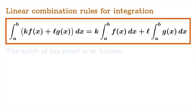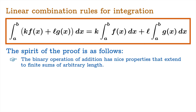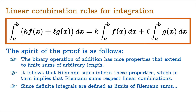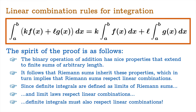The spirit of the proof is going to be as follows. The binary operation of addition has nice properties that extend to finite sums of arbitrary length. It follows that Riemann sums inherit these properties, which in turn implies that Riemann sums respect linear combinations. And since definite integrals are defined as limits of Riemann sums, and limit laws respect linear combinations, it turns out that definite integrals must also respect linear combinations — meaning the integral of a linear combination is the corresponding linear combination of the integrals.